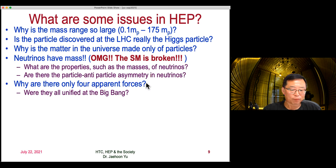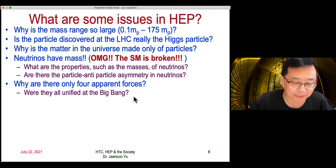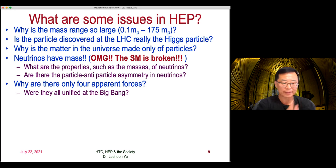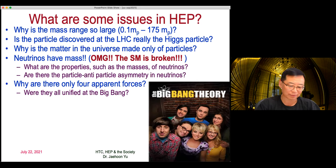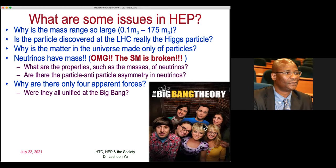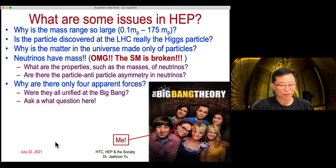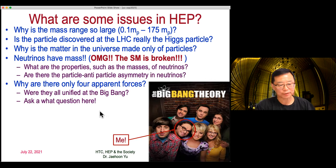Why are there only four apparent forces — or three, combining electroweak? Were they all unified at the Big Bang? At the Big Bang, everything in the universe was combined into a very small invisible point, so the energy density was very high, and you can imagine all forces unified into one. We're not talking about the Big Bang Theory TV show — I call myself this guy right here, the more reasonable one.